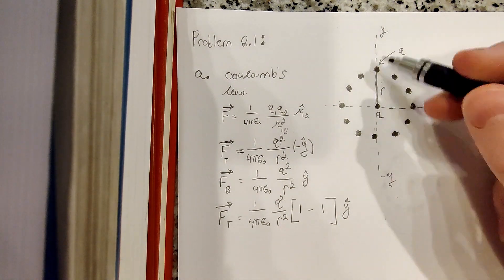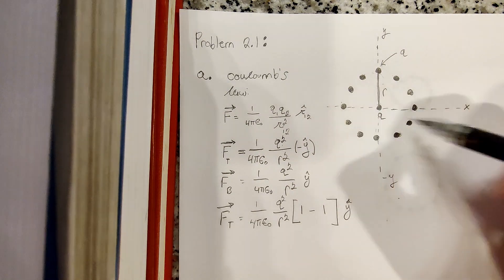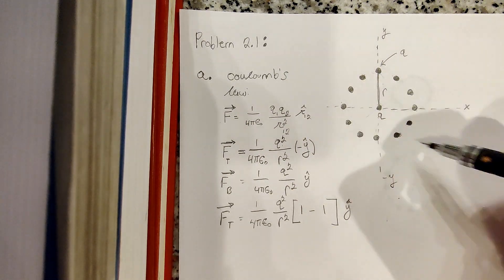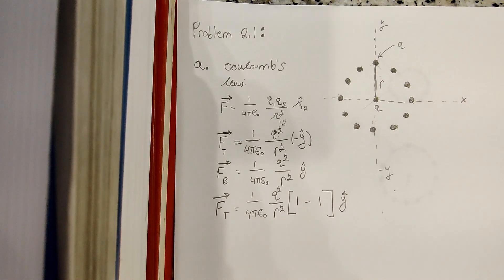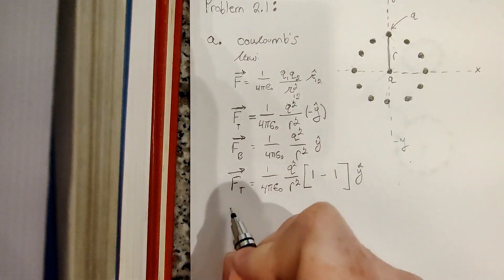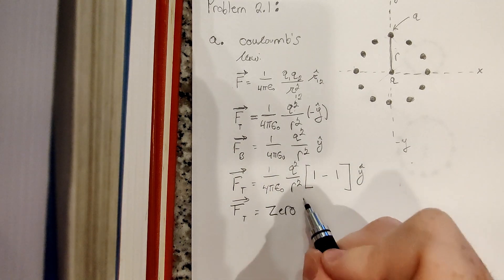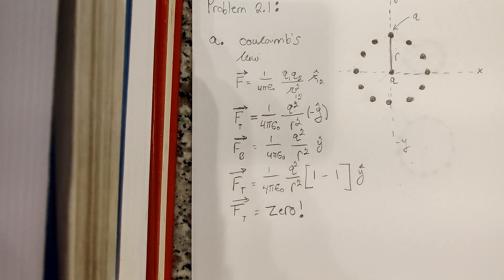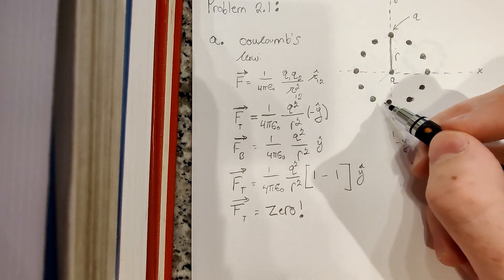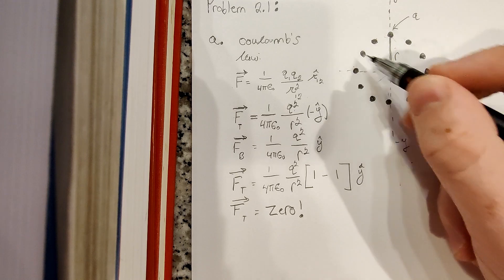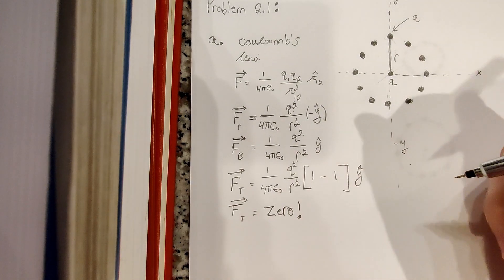Every charge has an equal charge on the opposite side pushing it in the other direction. Therefore, the total force on this center charge would be 0, because every charge has its counterpart pushing against it. The total force on the center charge is 0 — it experiences no force if you place it there.